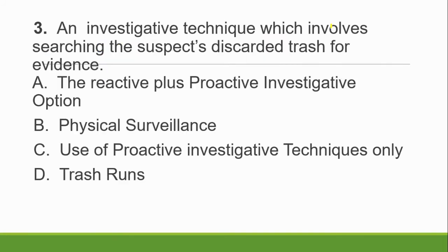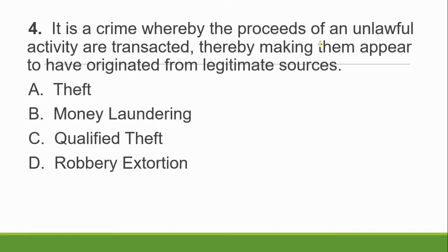Question 2: This is a technique to gain general background intelligence and information on a person's business habits and relationships — you are getting background and intelligence information on your subject. Is it A. reactive plus proactive investigation, B. physical surveillance, C. use of proactive investigation techniques, or D. trash runs? The answer is physical surveillance, because you are conducting intelligence or background investigation.